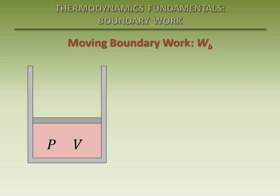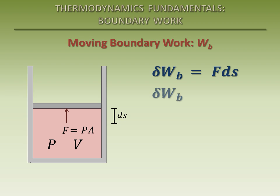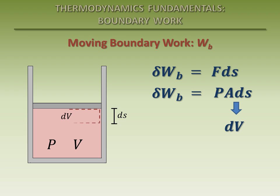V. The gas expands, and the piston is allowed to move a differential distance, dS. The differential boundary work done during this process is equal to the force on the piston times the distance the piston is moved. The force acting against the piston is equal to the pressure of the gas times the cross-sectional area of the piston. The product of this area and the distance the piston moves is equal to the differential change in the total volume of the gas.